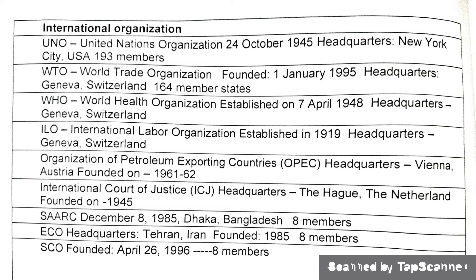Let's start the class. International organizations that are important: United Nations Organization — 24 October 1945, headquarters New York City USA, 193 members. WTO, World Trade Organization — founded 1st January 1995, headquarters Geneva Switzerland, 164 member states.